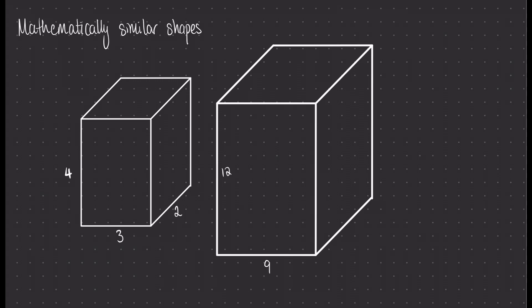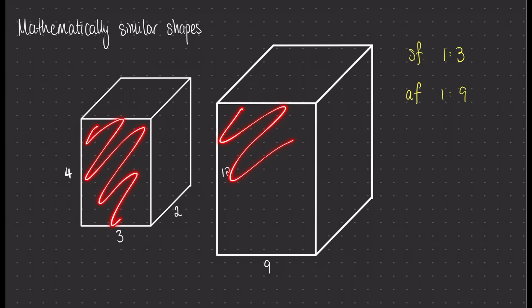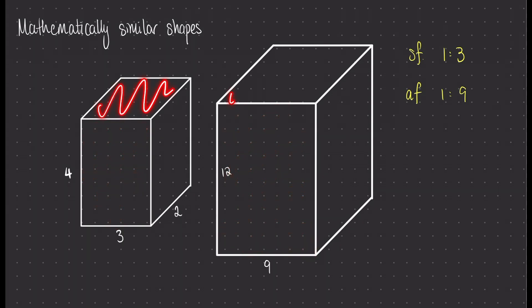I've taken the exact same rectangle and now elongated it to make a 3D cuboid. Remembering that our scale factor is 1 to 3 between the one-dimensional lines — the corresponding lines of the smaller shape to the larger shape — and we worked out that the area factor is 1 to 9. So the corresponding areas of the smaller object to the bigger object are related with ratio 1 to 9. That means not just the front face but also the top face of both shapes are related with the area factor 1 to 9.